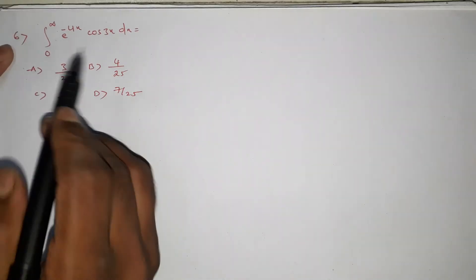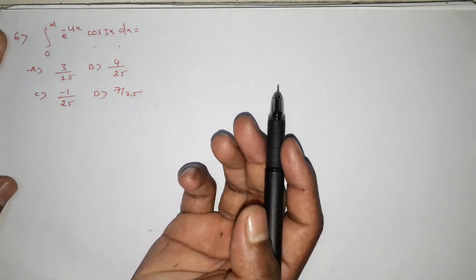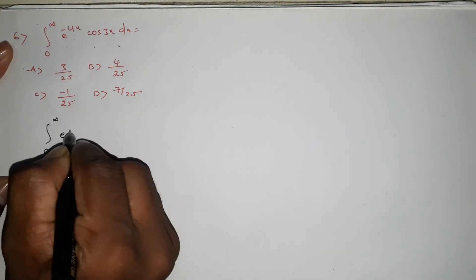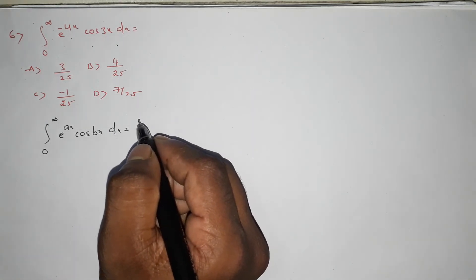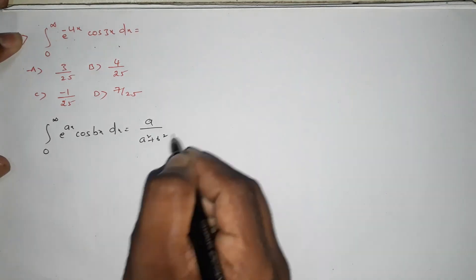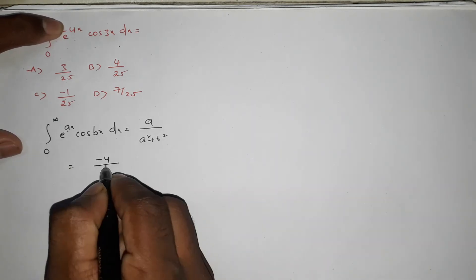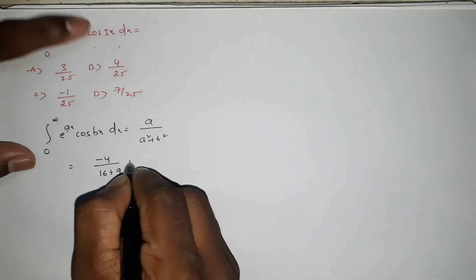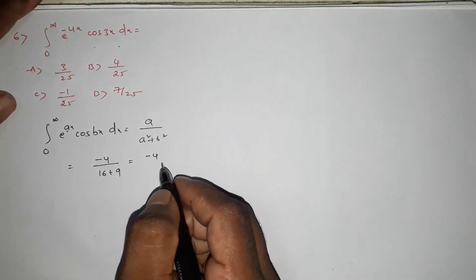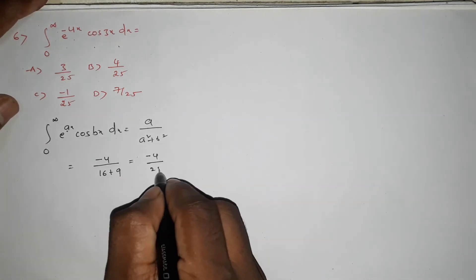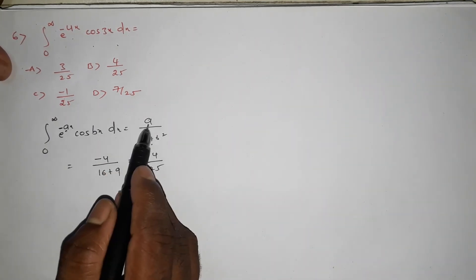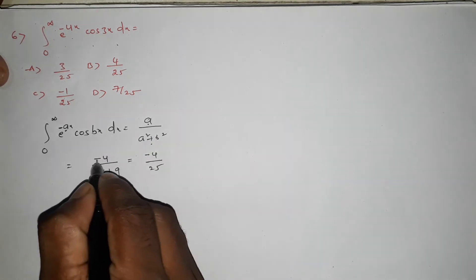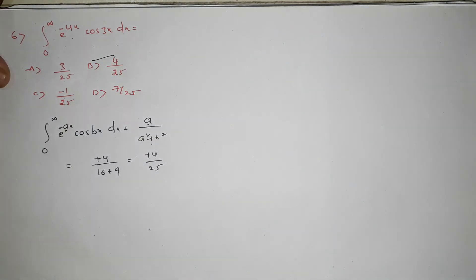Integration 0 to infinity, e power minus 4x cos 3x dx. Apply formula: integration 0 to infinity of e power ax cos bx dx equals a by (a squared plus b squared). Here a equals minus 4, b equals 3. So answer is minus 4 by (16 plus 9) equals minus 4 by 25. With the formula for e power minus ax, the answer is 4 by 25. Option 4 by 25 is the answer.